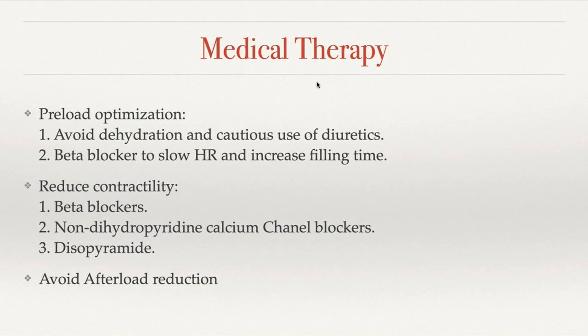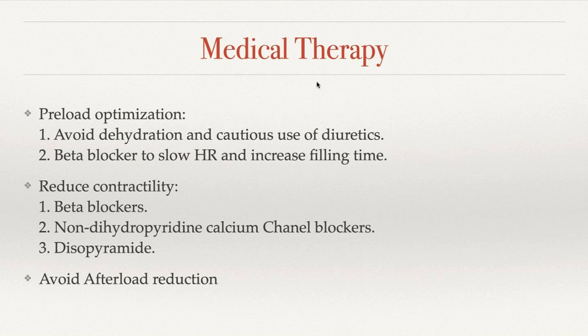Regarding medical therapy: for preload optimization, avoid dehydration and use caution with diuretics. Beta blockers or non-dihydropyridine calcium channel blockers slow the heart rate, increasing filling time and therefore preload. We reduce contractility with beta blockers and non-dihydropyridine CCBs, avoiding dihydropyridine CCBs as they decrease afterload. Disopyramide, an antiarrhythmic drug with a negative inotropic effect, can also be used. And we avoid afterload reduction.